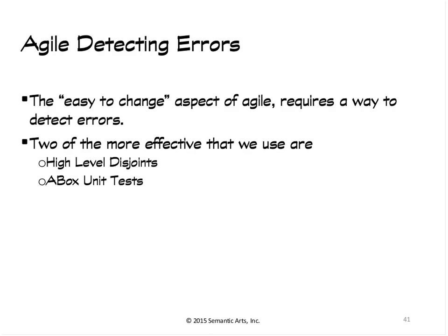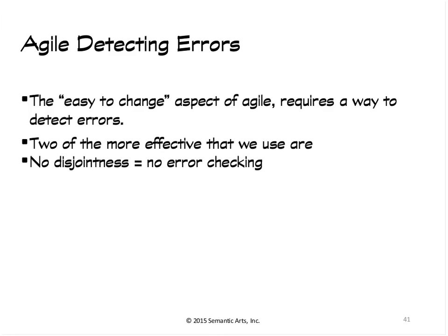If we're going to have an agile system — one where we can change the definitions of things, change the structure, while systems already in place keep running — we better do the same thing agile developers did: have a way to detect errors rapidly, because something that's easy to change is also easier to break. A couple of mechanisms we use that I think are worth reporting on: we call them high-level disjoints and A-Box unit tests.